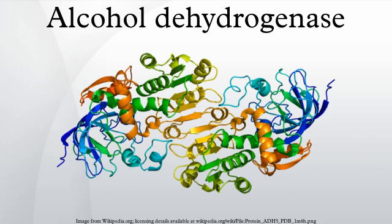Alcohol dehydrogenases comprise a group of several isozymes that catalyze the oxidation of primary and secondary alcohols to aldehydes and ketones, respectively, and also can catalyze the reverse reaction. In mammals this is a redox reaction involving the coenzyme nicotinamide adenine dinucleotide. Alcohol dehydrogenase is a dimer with a mass of 80 kDa.